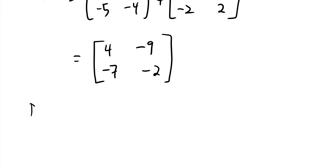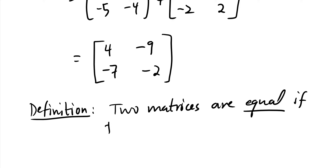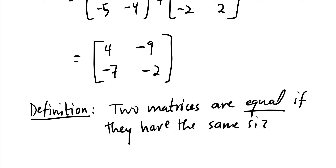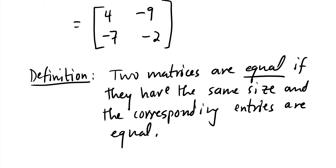Now we introduce a definition. We say two matrices are equal if they have the same size — such as two-by-two, three-by-four, or five-by-seven — and their corresponding entries are equal. Both conditions together tell us the two matrices are equal.